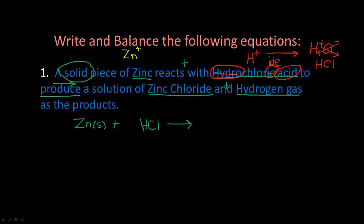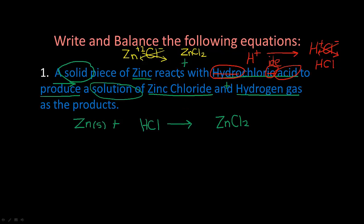Zinc has a plus two charge; we already know chloride has a minus one charge. Cross them: the two goes down by Cl, so the formula for zinc chloride is ZnCl₂. It says it is a solution, meaning it is aqueous, so I'm going to put (aq) behind it.